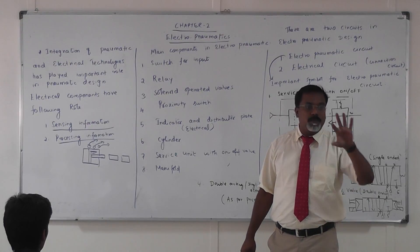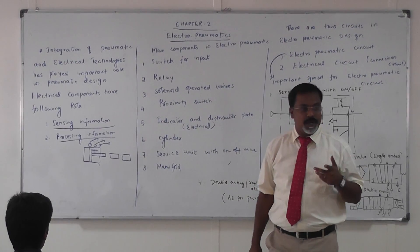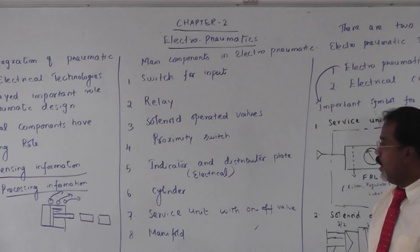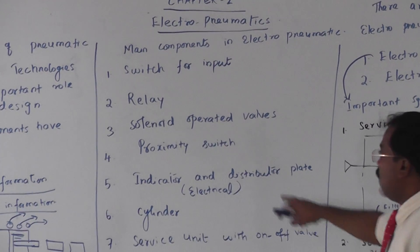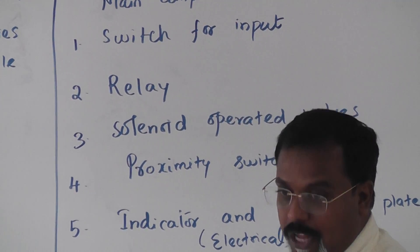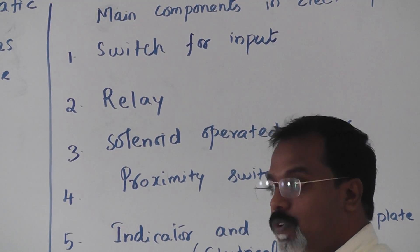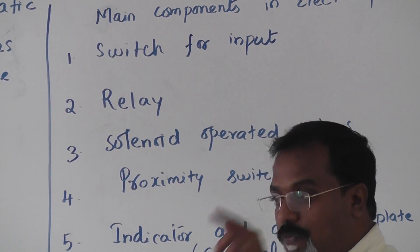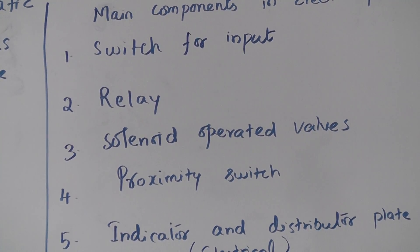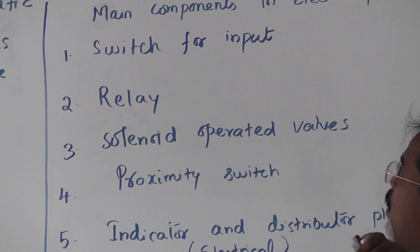These are the important roles of electrical components. The main components in an electro-pneumatic circuit are: the electrical switch, which provides input to the circuit, and the relay. The relay is used to open or cut a circuit and also acts as a safety device. When you press a switch, the signal goes to the relay; when the relay closes, the signal goes to the solenoid operated valve. The relay is a very important component in the electro-pneumatic cycle.